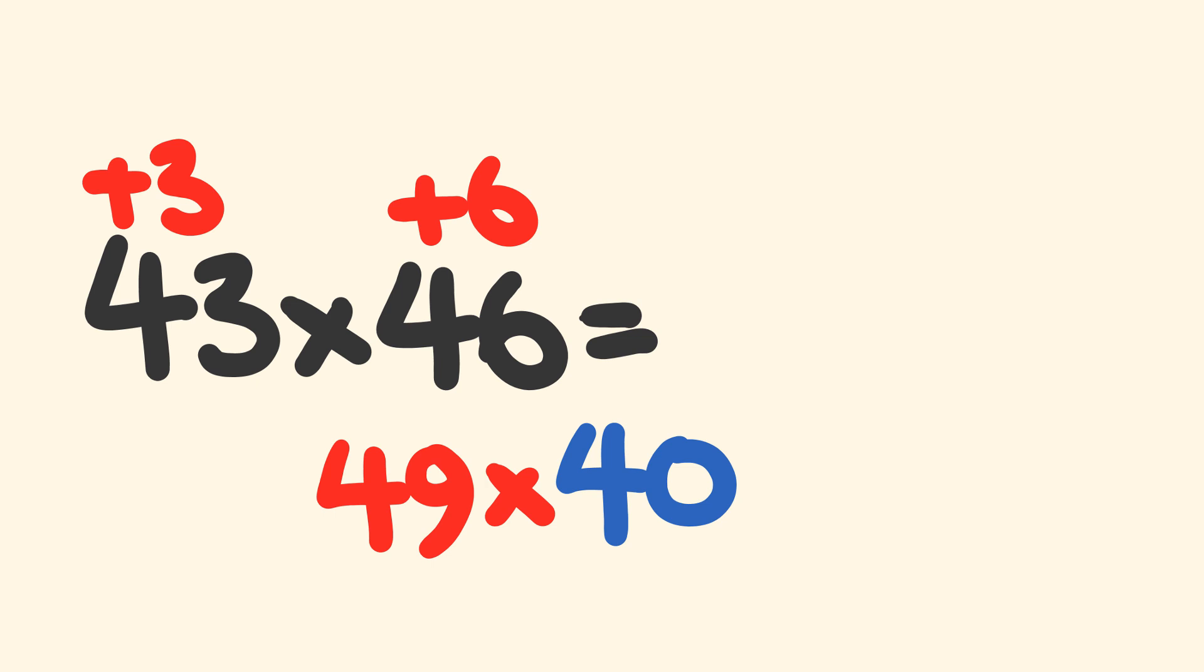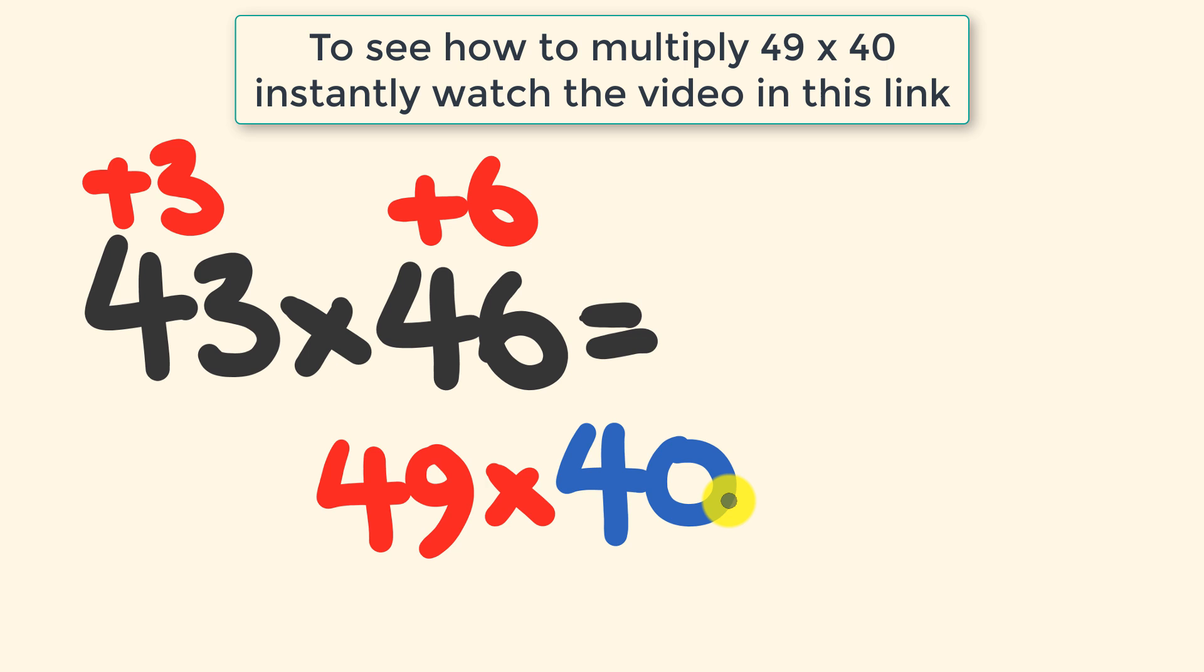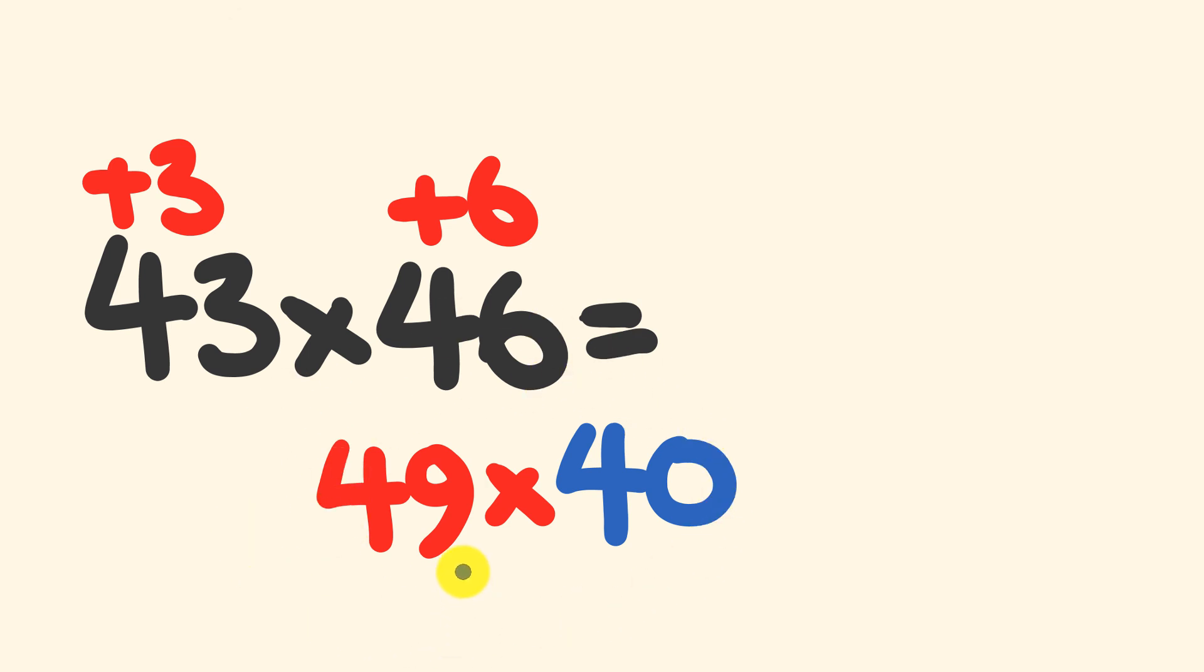Now, if you've watched my previous video that I made to this, I showed you a nice, easy way that you could do this pretty much instantly. So if you do this, you're going to first off get 1600 plus 360, this answer of 1960. And I'm just going to jot that down right there.